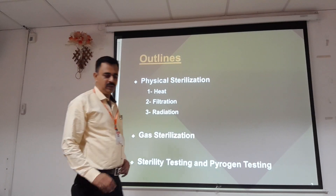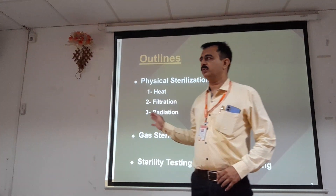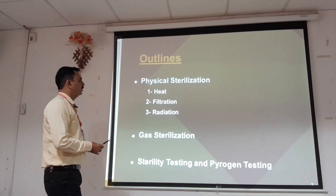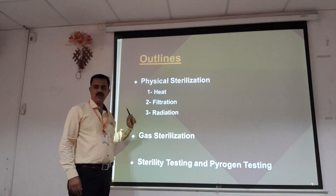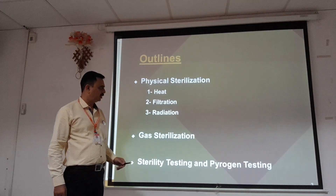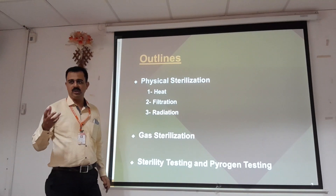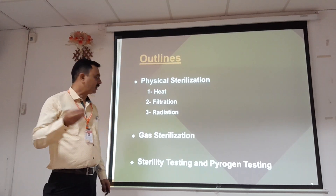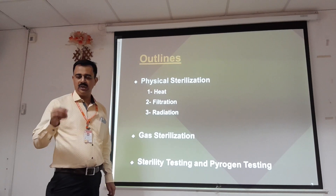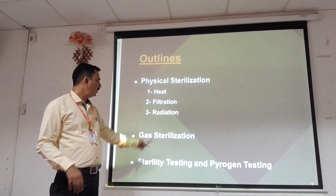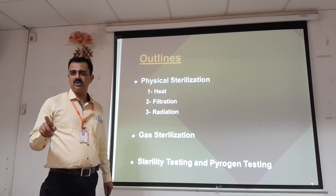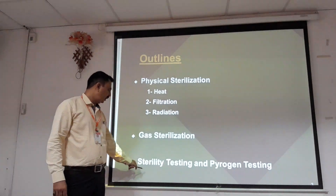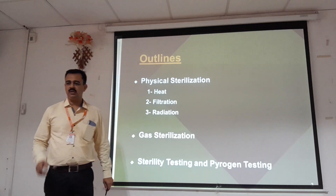Continuing from yesterday, we will review the methods of sterilization. Physical sterilization includes heat, filtration, and radiation. The choice depends upon the material to be sterilized — some materials are heat sensitive, so filtration may be necessary. Gas sterilization uses ethylene oxide and is used specifically in the pharmaceutical industry.